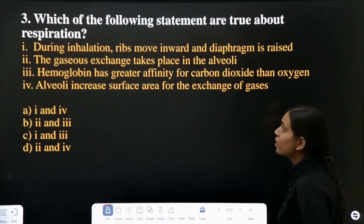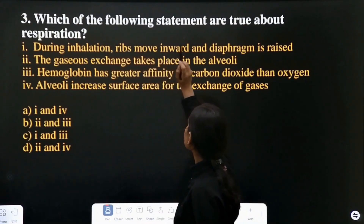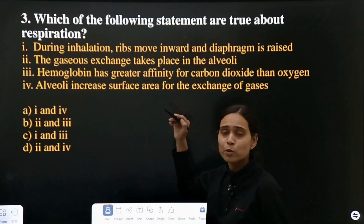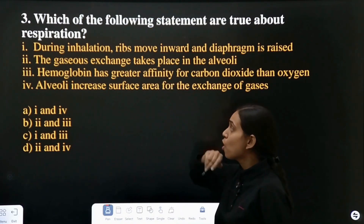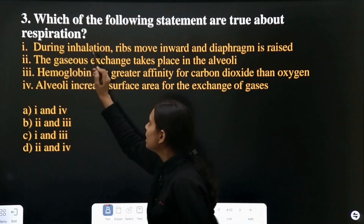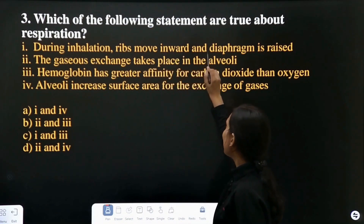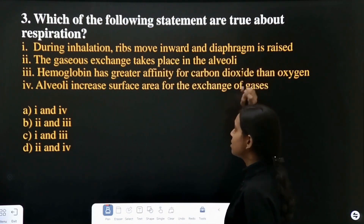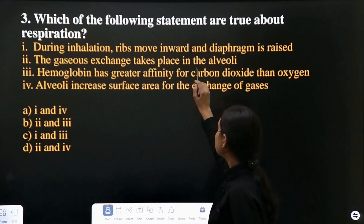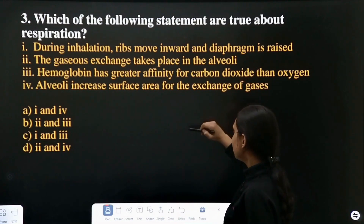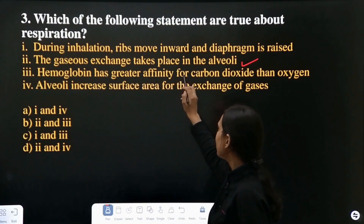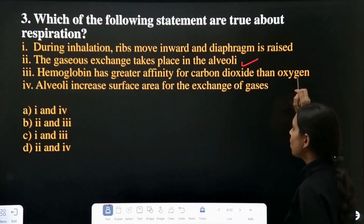Question 3: which of the following statements are true about respiration? There are 4 options — identify which statement is correct. During inhalation, ribs move inward and diaphragm is raised — is it correct? No. Gases exchange takes place in the alveoli — that is correct. Hemoglobin has greater affinity for carbon dioxide than oxygen.